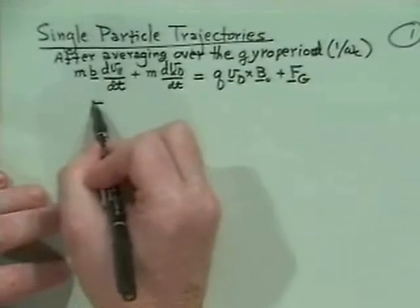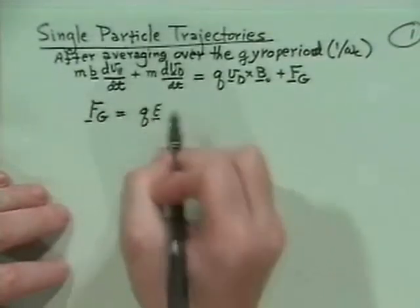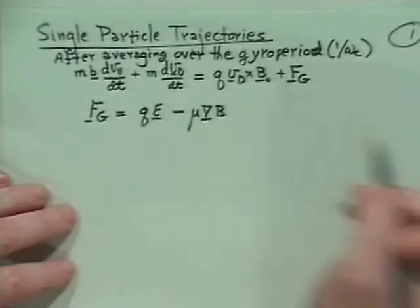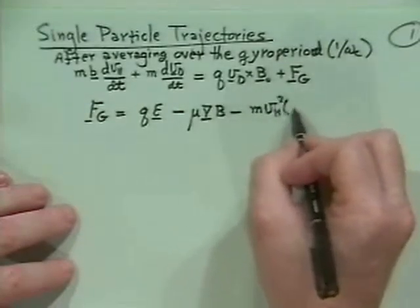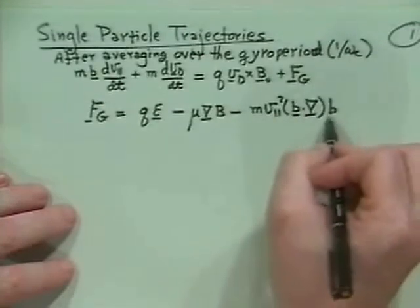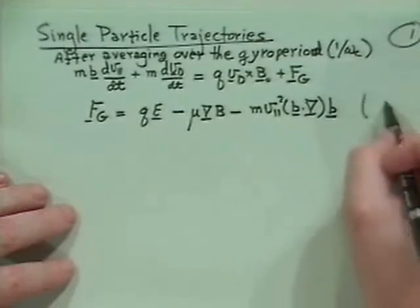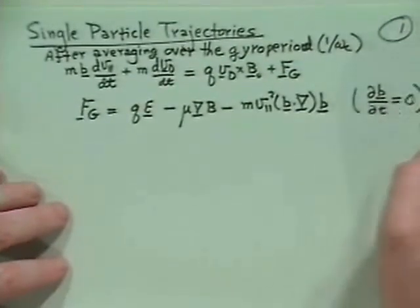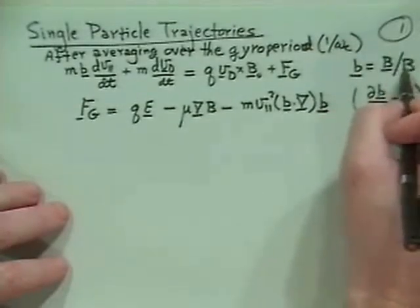We had that the force on the guiding center was equal to the electric field Lorentz force, then there was a grad-B force, minus mu grad B, and then finally a curvature force, mv_parallel² times b-hat · ∇b. We've assumed that the magnetic field unit vector b-hat is not varying in direction, so db-hat/dt = 0.